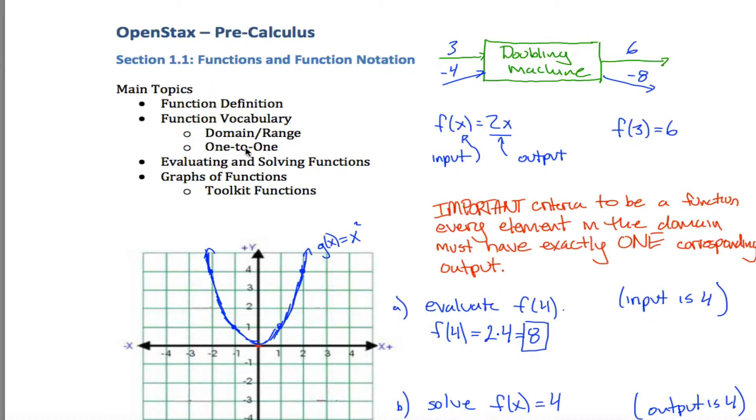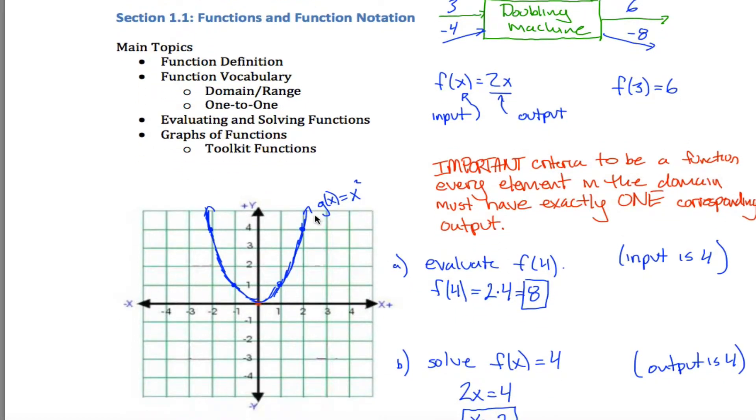A couple more things to talk about, 1 to 1. Some functions are 1 to 1, some are not. The idea of being 1 to 1 is kind of similar to this important criteria here about being a function. This criteria says that any one input cannot have more than one output corresponding with it. What it means to be 1 to 1 for a function is that it cannot be the case that you have multiple inputs that have the exact same output. Wait, those sounded pretty similar. Maybe I can do an example that makes that make more sense.